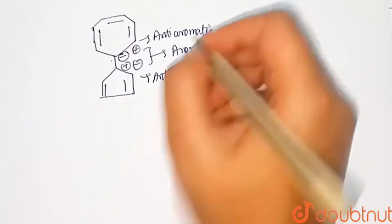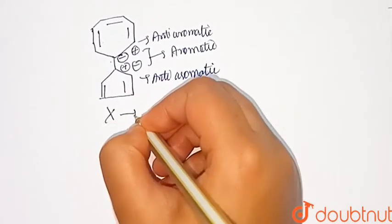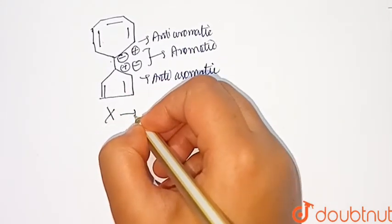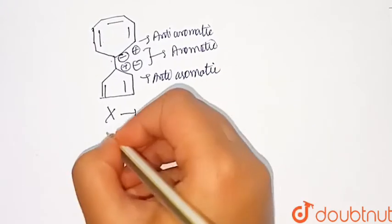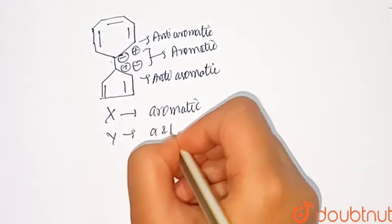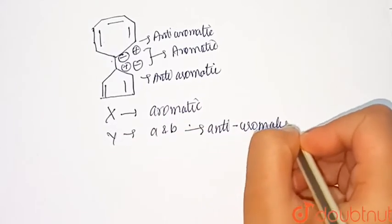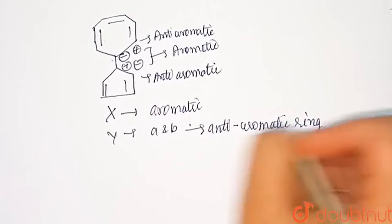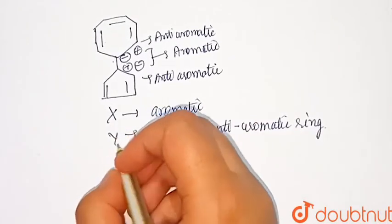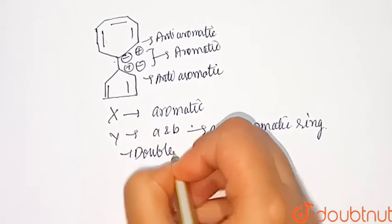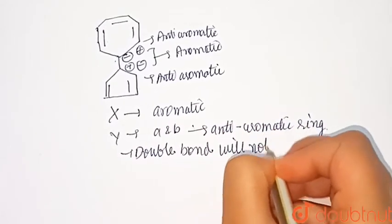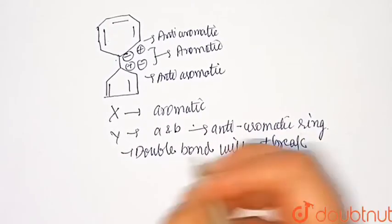Now we can see that X have path A as preferable - both rings aromatic. And in Y we can see that A and B are similar, both have one anti-aromatic. So double bond will not break. Double bond will not break. So Y is our answer.